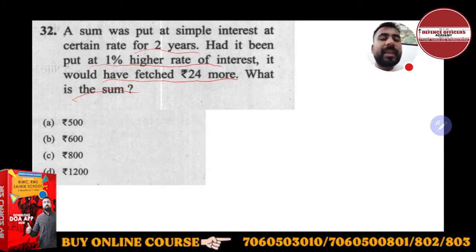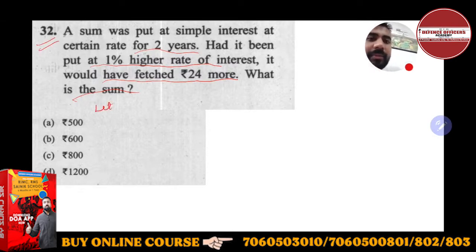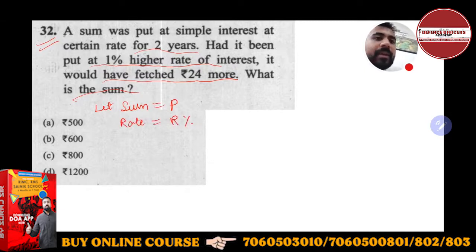What is given to you? It is given that a sum was put at simple interest. Let that sum you can take is equal to P. At a certain rate you can take, rate is equal to R percent. Rate is nothing but R percent. For two years, time is given to you, how many years? Two years.